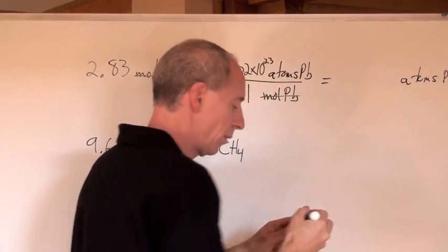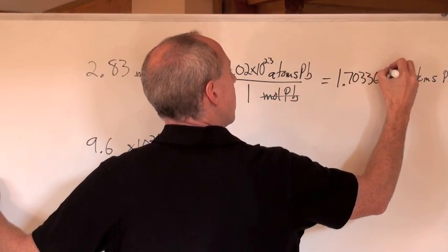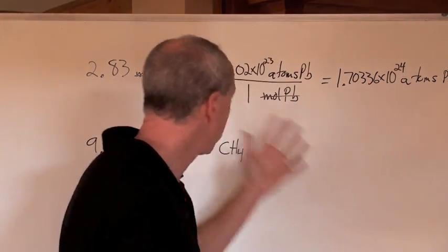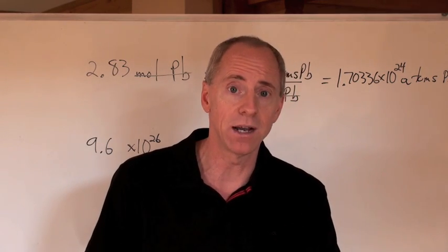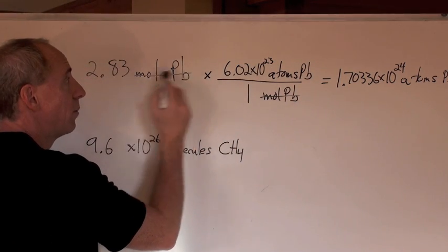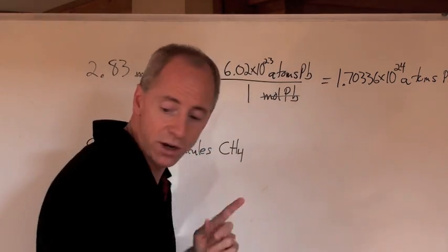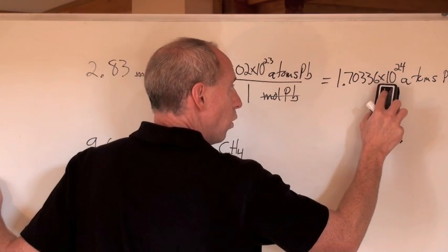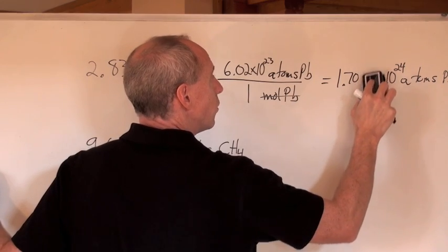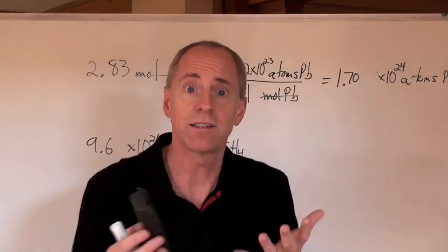The answer here is 1.70336 times 10 to the 24 atoms of lead — that's the calculator result. You don't keep that entire number; you have to use significant digits. I have three significant digits in 2.83, three in 6.02, and infinite in the ratio. The least number of significant digits is three, so the answer is 1.70 times 10 to the 24 atoms of lead.